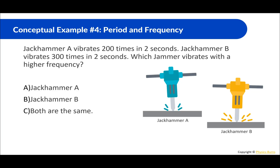Jackhammer A vibrates 200 times in 2 seconds. Jackhammer B vibrates 300 times in 2 seconds. Which jackhammer vibrates with a higher frequency? Jackhammer A vibrates 200 times in 2 seconds, giving a frequency of 100 hertz. Jackhammer B vibrates 300 times in 2 seconds, giving 150 hertz. So Jackhammer B has the higher frequency.